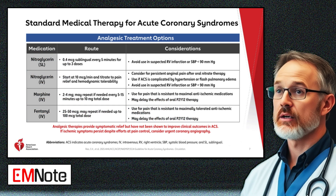Standard medical therapy for acute coronary syndromes: Analgesic therapies provide symptomatic relief but do not improve clinical outcomes. Sublingual nitroglycerin is administered at 0.4 micrograms every 5 minutes for up to 3 doses. Intravenous nitroglycerin is considered for persistent pain, hypertension, or flash pulmonary edema. Morphine or fentanyl may be used for refractory pain. Persistent ischemic symptoms despite pain control warrant urgent coronary angiography.